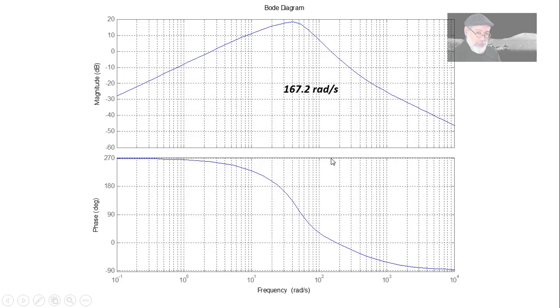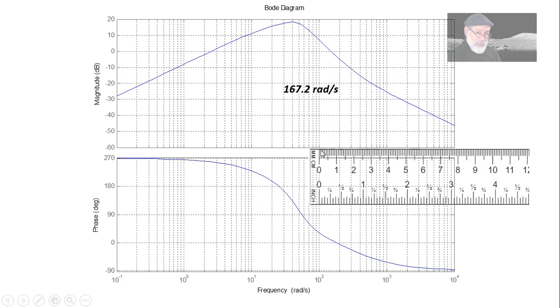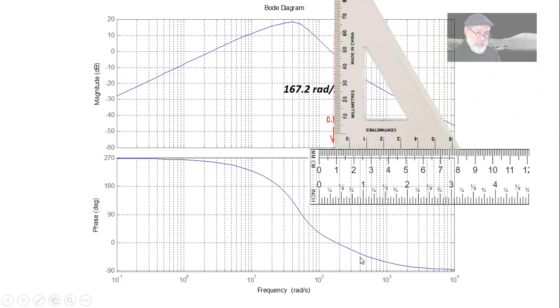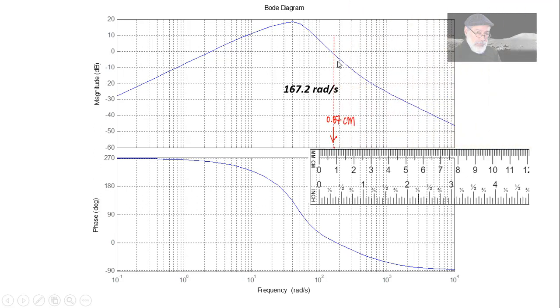We need to measure 0.87 centimeters to the right of this point. This way. Measure there. 0.87 centimeters. Bring a triangle and draw a vertical line there. That in the intersection with the blue plot tells us what is the amplitude in decibels of that transfer function.